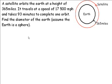The satellite orbits the earth at a height of 365 miles. It travels at a speed of 17,500 miles per hour and takes 93 minutes to complete one orbit. Find the diameter of the earth, and we have to assume that the earth is a sphere.